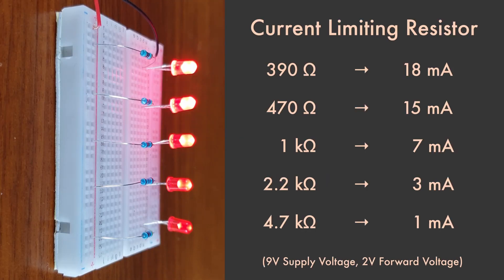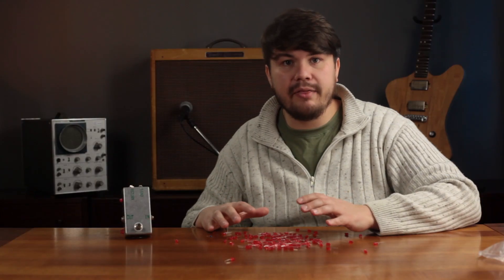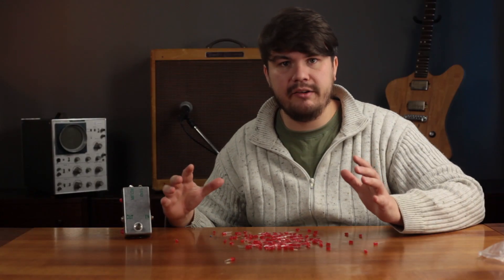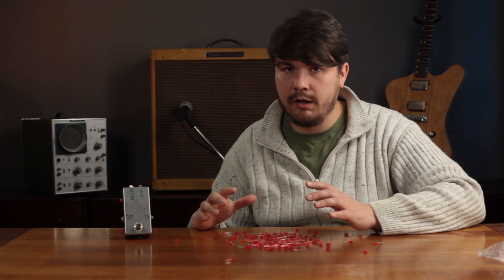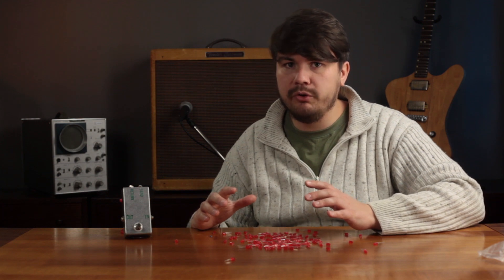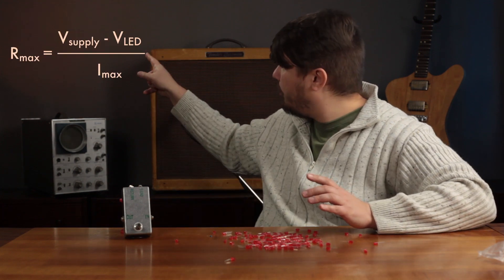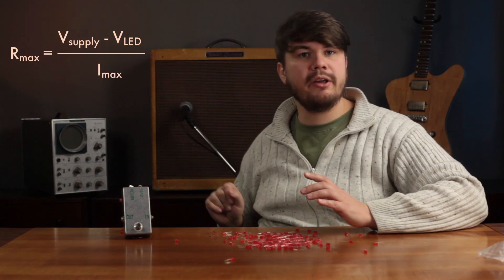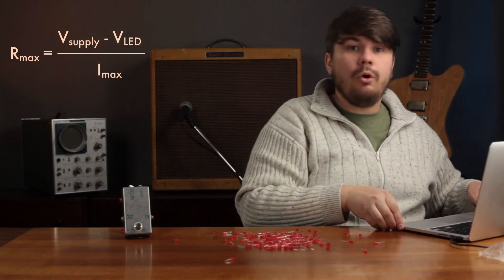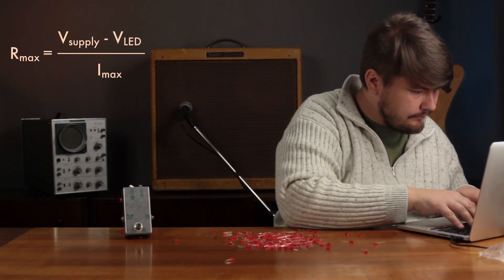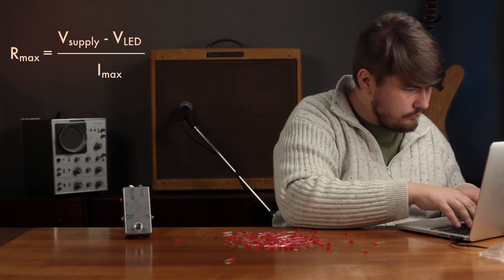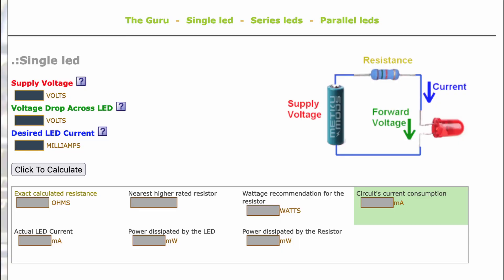The higher the resistance, the harder it is for electrons to reach the LED, lowering the current through it and making the LED shine dimmer. If you want to get maximum brightness out of an LED, you have to use the smallest safe resistor. We could do some math using a formula to work it out, or look it up online — there are many websites.